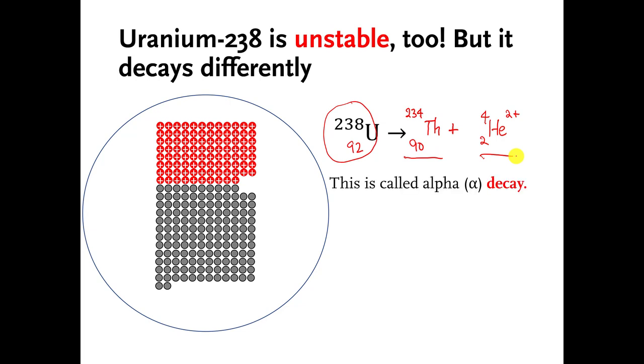This is the kind of decay that they found first. So this type of decay is called alpha decay. Again, I don't really care that you know these names, but they do show up in your book. I'm not going to quiz you on the names. I'm going to do this type of thing on a quiz or a test. I'm going to hide one of the pieces in the decay equation and ask you to figure out what it's made of.